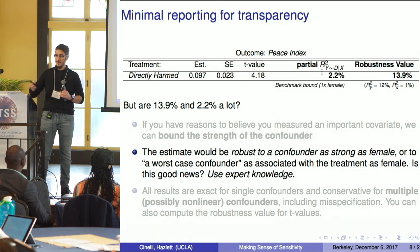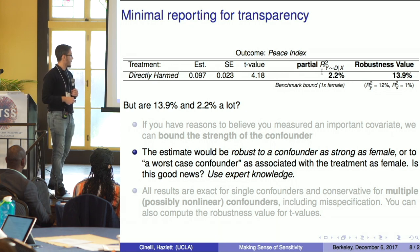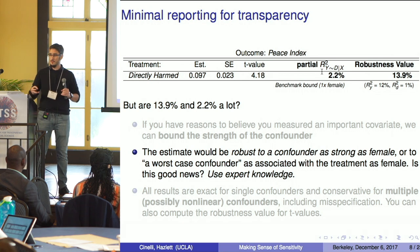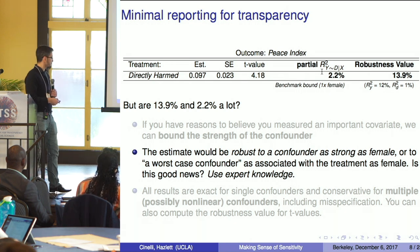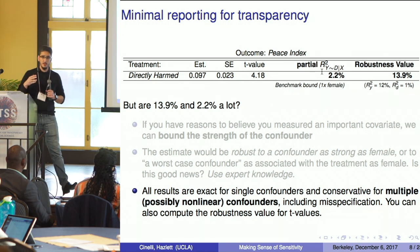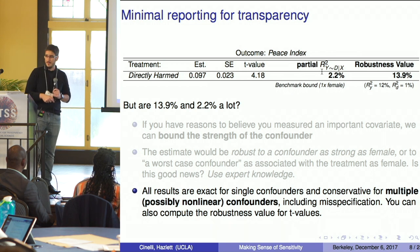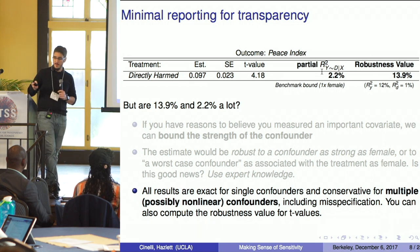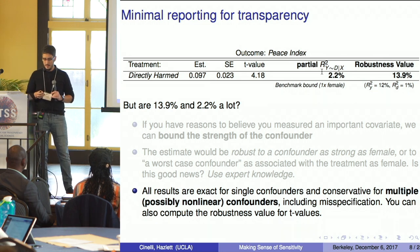In this case you can argue that female is a very strong predictor of treatment assignment: it's a visual characteristic, so the militia could tell whether you're female or male, and they had a special interest in attacking females due to sexual assault. So there are strong reasons to believe female is one of the strongest covariates, making it hard to think anything is stronger. These results are exact for single confounders but conservative for multiple confounders — even non-linear multiple confounders or misspecification — and can also be applied to t-values.